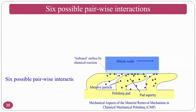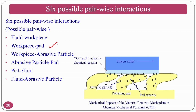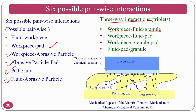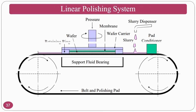There are six possible pairwise interactions in CMP: fluid-workpiece, workpiece-pad, workpiece-abrasive particle, abrasive particle-pad, pad-fluid, and fluid-abrasive particle. Three-way interactions also exist: workpiece-fluid-abrasive, workpiece-fluid-pad, workpiece-abrasive-pad, and fluid-pad-abrasive. The more random the finishing process, the better the surface finish achieved. In linear polishing, a belt-based polishing pad moves continuously while rotational motion is applied to the workpiece, along with slurry supply.